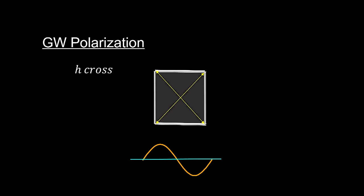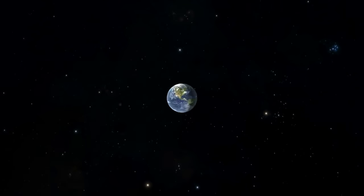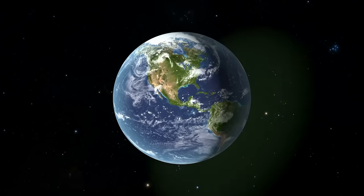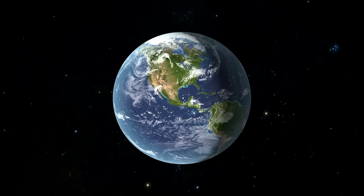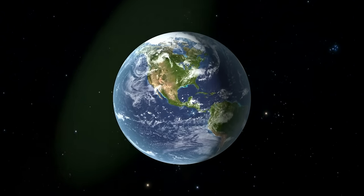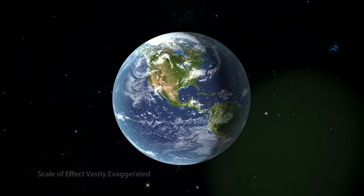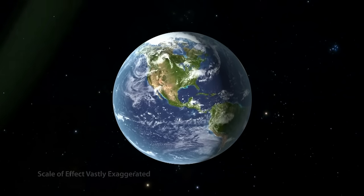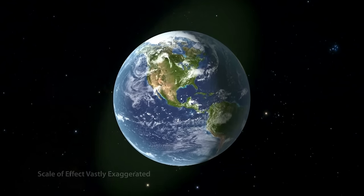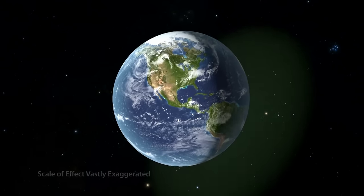When describing a gravitational wave, we can now be more precise than it's a ripple in space-time. A gravitational wave is an oscillating polarized metric that operates in the plane perpendicular to the direction of the wave as it moves through space at the speed of light.